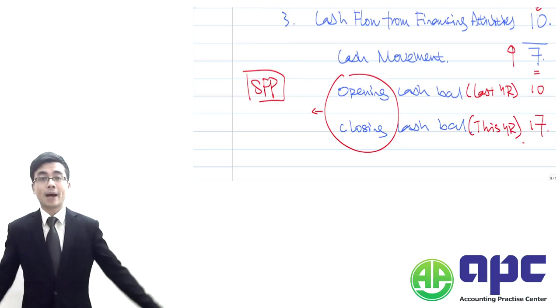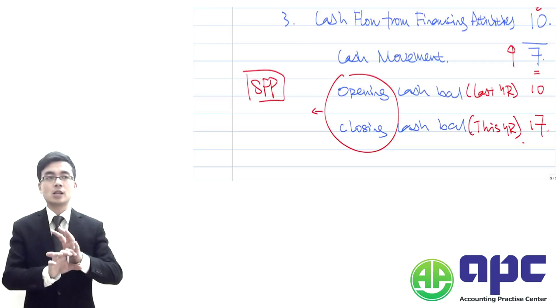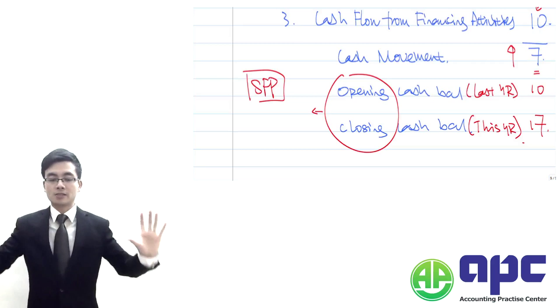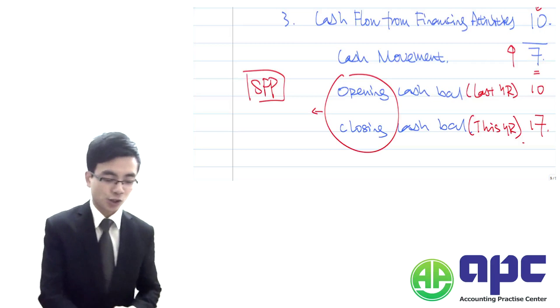So we're going to compare two sets of financial statements. One is 10, one is 17, which means that the cash balance is increased by 7 during this year.